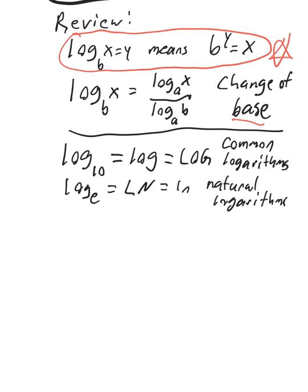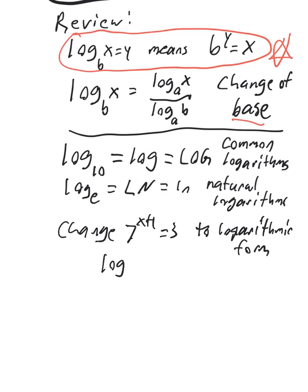So for example, let's say we want to change 7 to the x plus 1 equals 3 to logarithmic form. If we want to write that in logarithmic form, remember whatever the base is in the exponential form, that's going to be the base in the logarithmic form. So we want log base 7. And the exponent is what the logarithm is equal to. Here the exponent is x plus 1. 7 to the x plus 1 is going to be the 3. So that's changing to logarithmic form from exponential form.